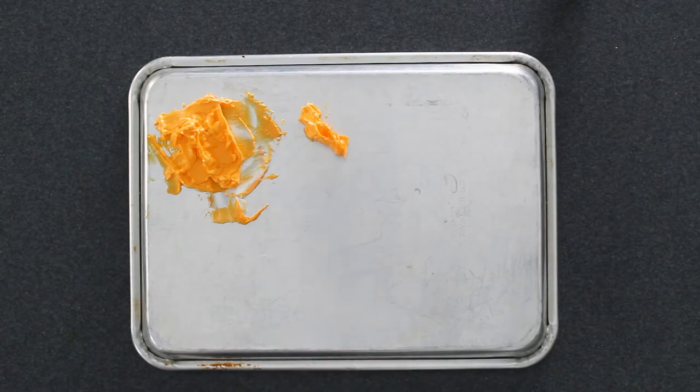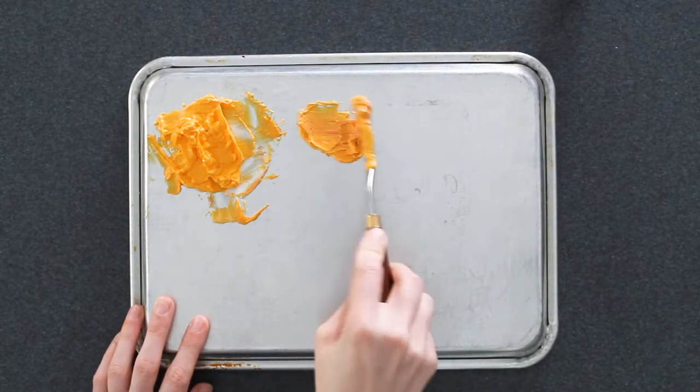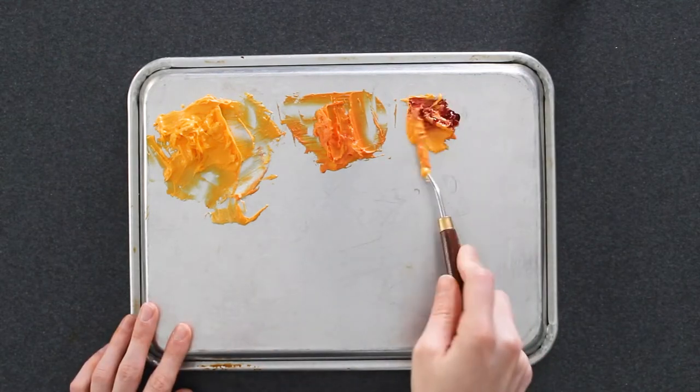Next, I'm going to take some of the yellow and use it to mix my orange and red. This will give me a variety of shades to use for my petals. I use just a tiny drop of red to make the orange and then a bit more red to make the deeper red color.